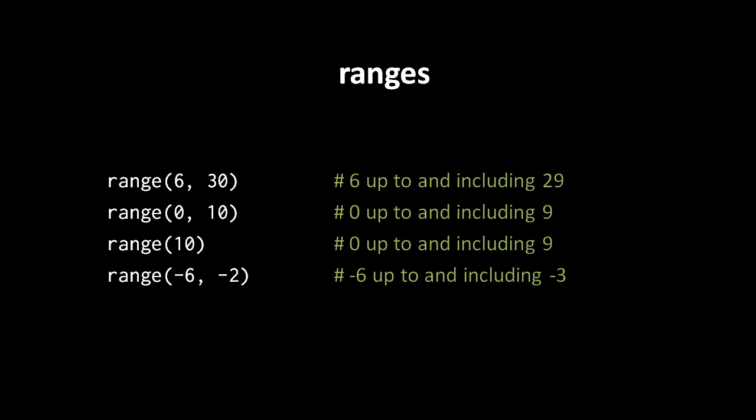We create a range using the range constructor found in the built-in namespace. We invoke the range constructor and pass to it two arguments, two number values. The first is where the range is going to start. The second specifies where the range ends, though actually it specifies one past the end of the range. So if you write range(6, 30), what you get is a range representing the value 6 up to and including 29, not 30.